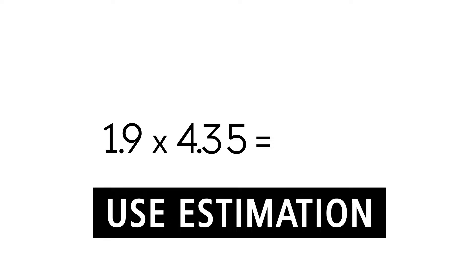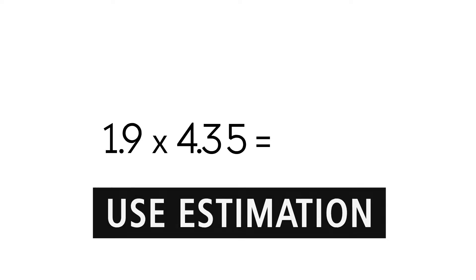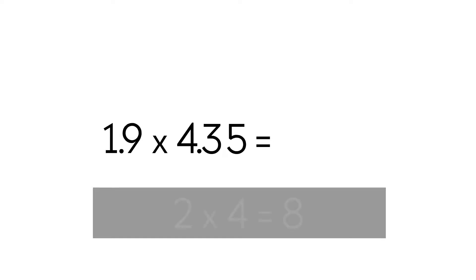One way is using estimation. We estimate the product by rounding each factor to the nearest whole number and multiplying them as whole numbers. We can round 1.9 up to 2 and round 4.35 down to 4. Now we have 2 times 4, which equals 8. So our answer for 1.9 times 4.35 should be around 8.